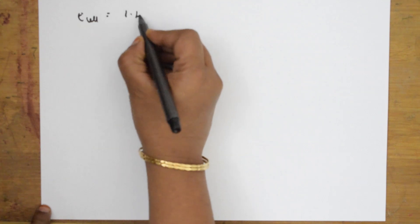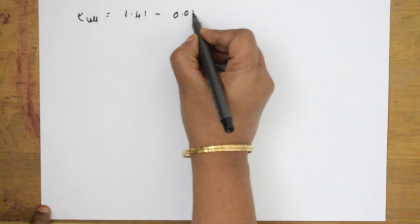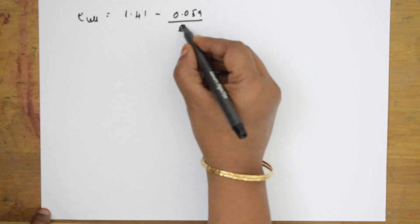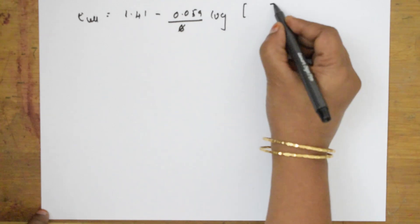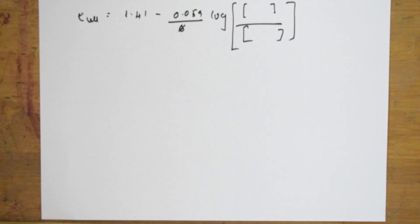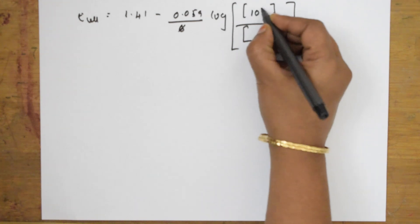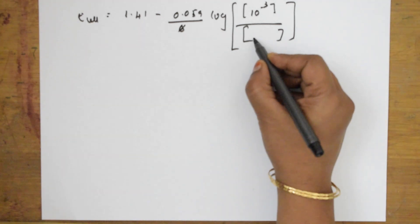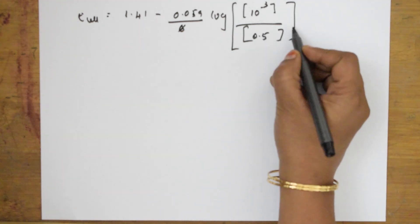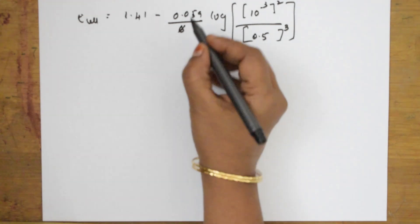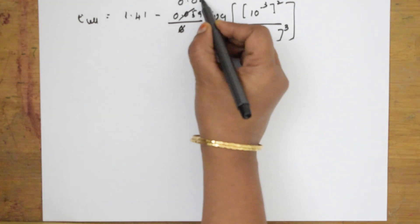So E_cell = 1.41 − (0.059/6) × log[(0.001)² / (0.50)³]. Evaluating 0.059/6 gives approximately 0.0098. Now I need to simplify the log expression. I can write 0.001 as 10⁻³, so (0.001)² = (10⁻³)² = 10⁻⁶. And (0.50)³ = (1/2)³ = 1/2³.